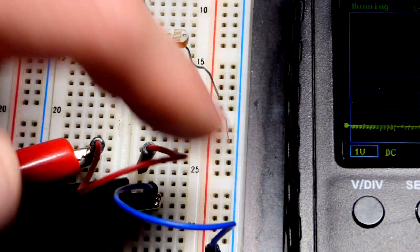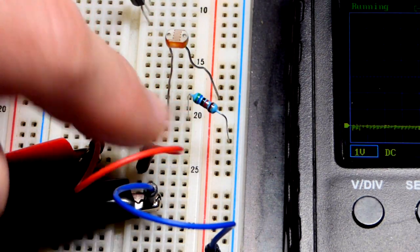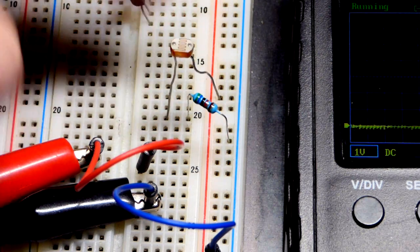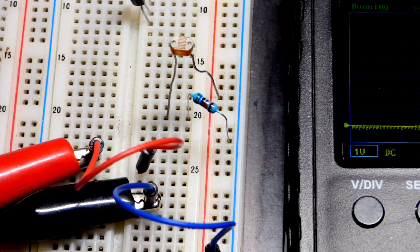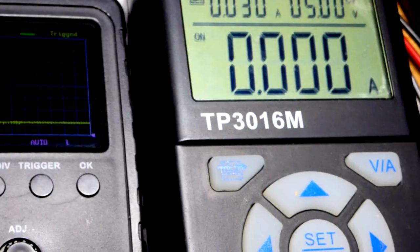So current can flow through there based on the fixed value resistor and the variable resistance here, but it will build up a voltage right there. And to look at that voltage, we're going to use this oscilloscope.